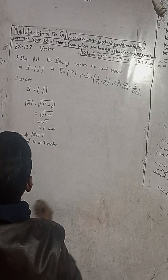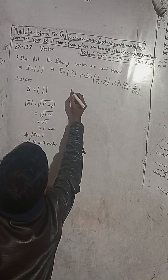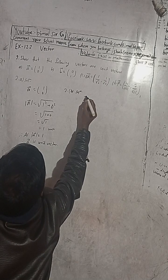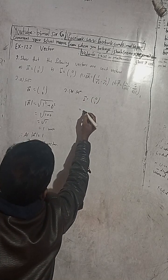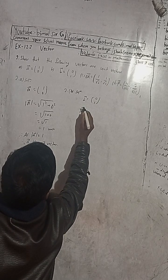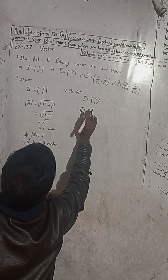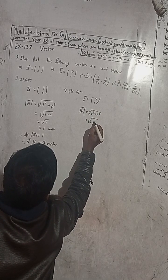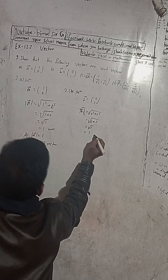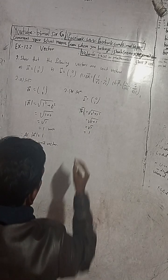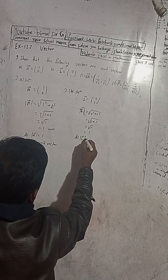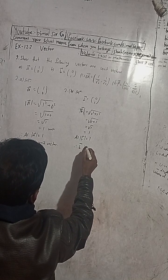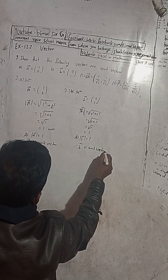Now for part B: vector B is equal to (0, 1). The modulus of vector B is equal to root under 0 squared plus 1 squared. So 0 squared is 0, plus 1 squared is 1, giving 0 plus 1 equals 1, and root 1 is 1 unit. Therefore, as modulus of vector B is equal to 1, vector B is a unit vector.